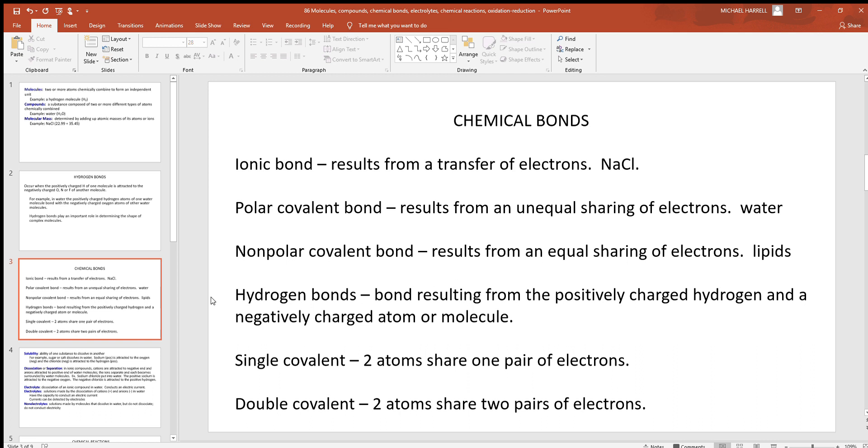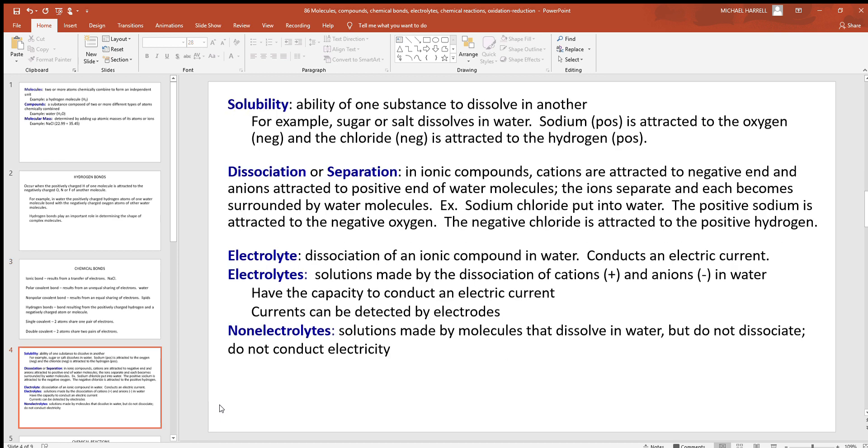Hydrogen bonds we mentioned before, bonds resulting from the positively charged hydrogen and a negatively charged atom or molecule close to it. And you can also have with covalent single and double. Single covalent bonds are where two atoms share one pair of electrons. Remember these electrons are shared in pairs. So single's where you got one pair, two electrons being shared. Double covalent where you got two atoms sharing two pairs, so four electrons there.